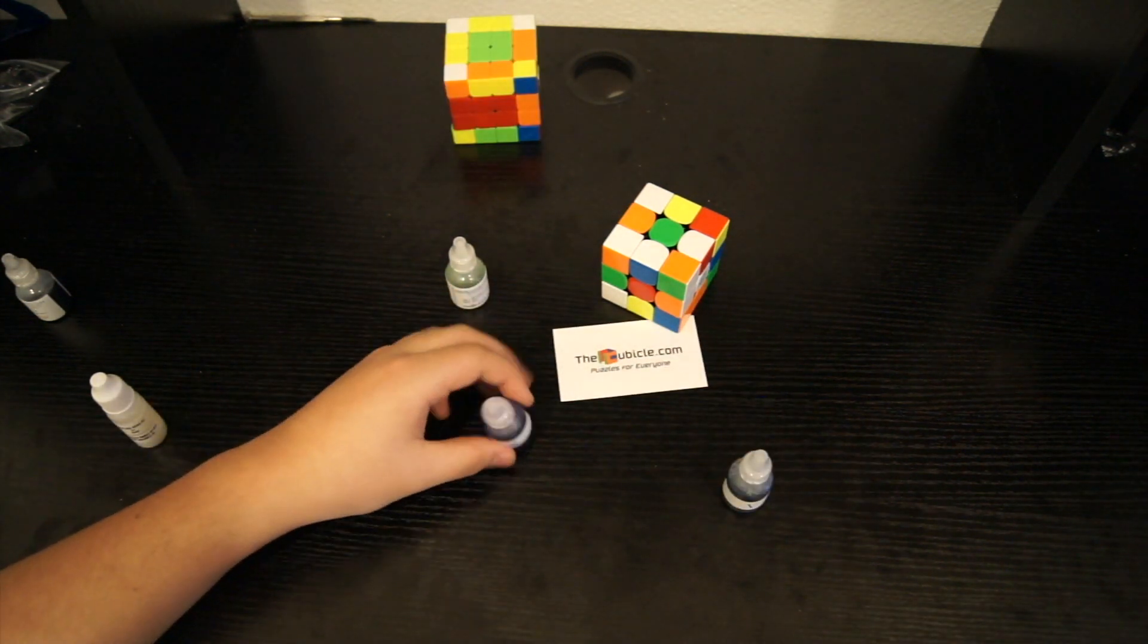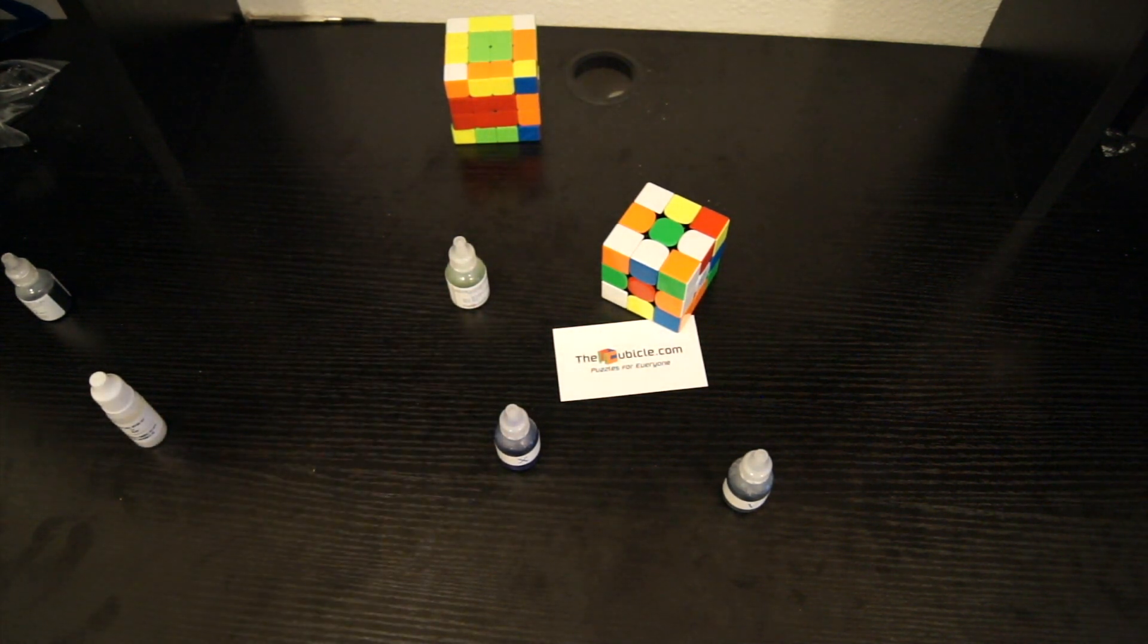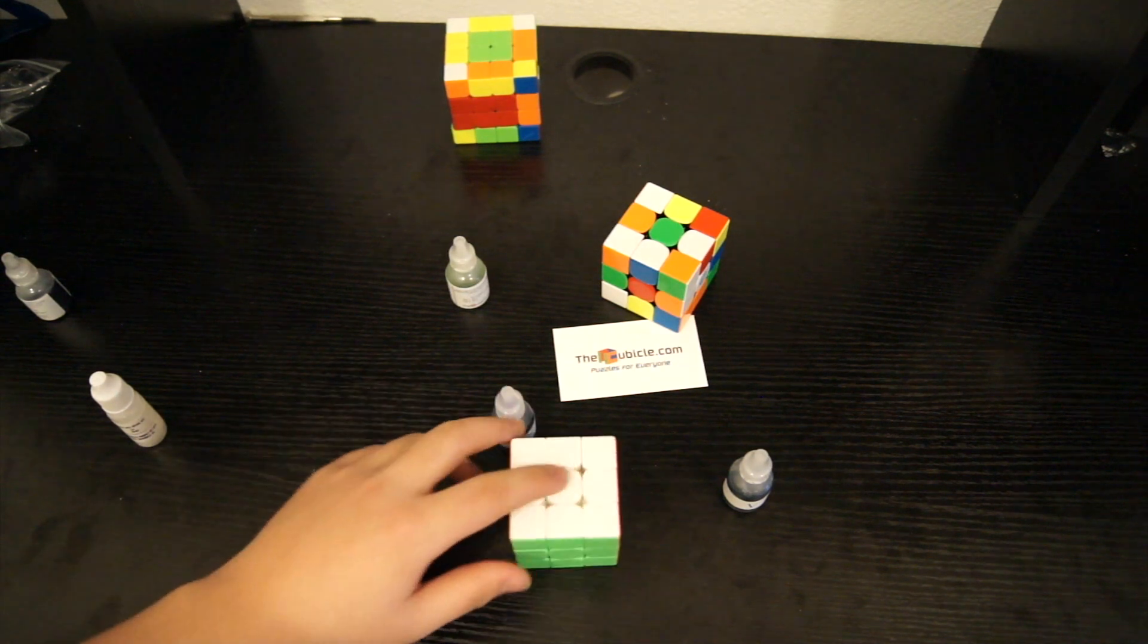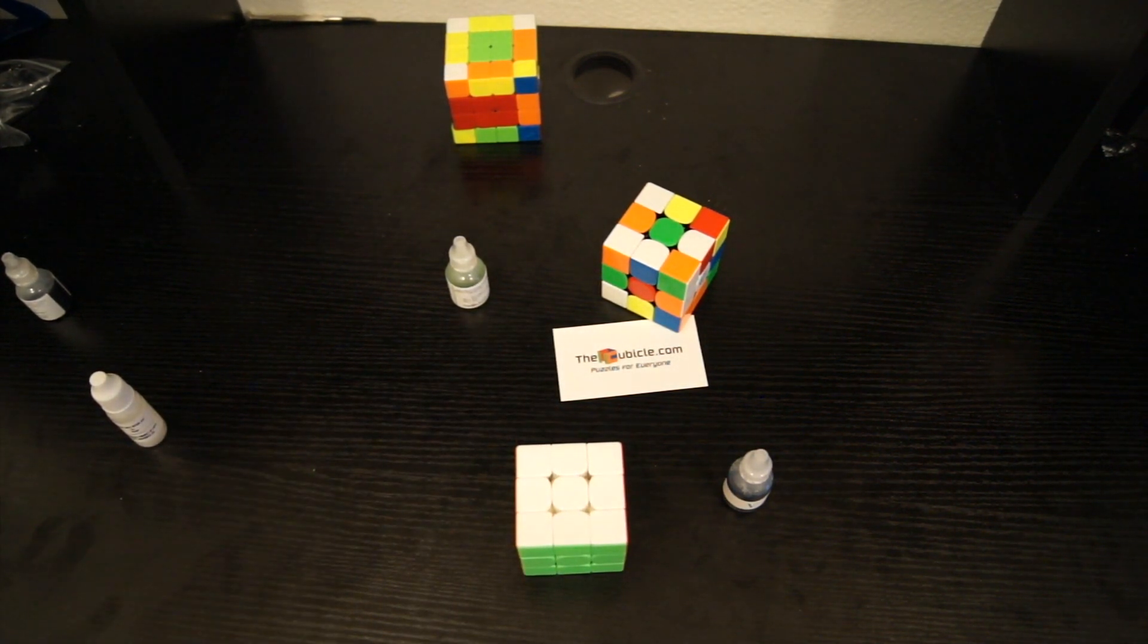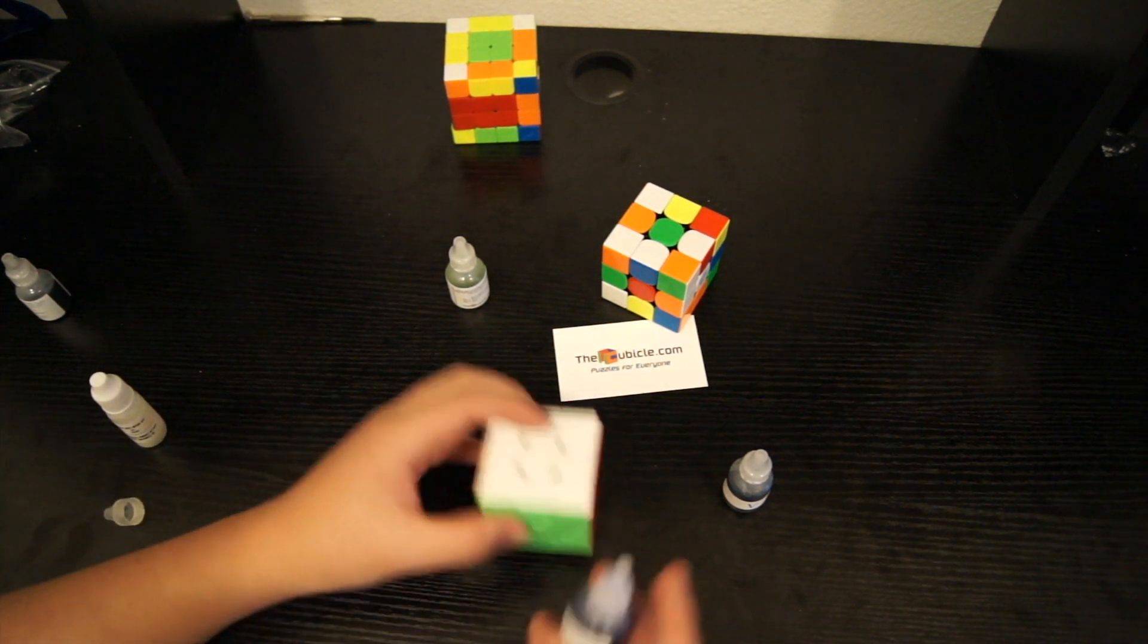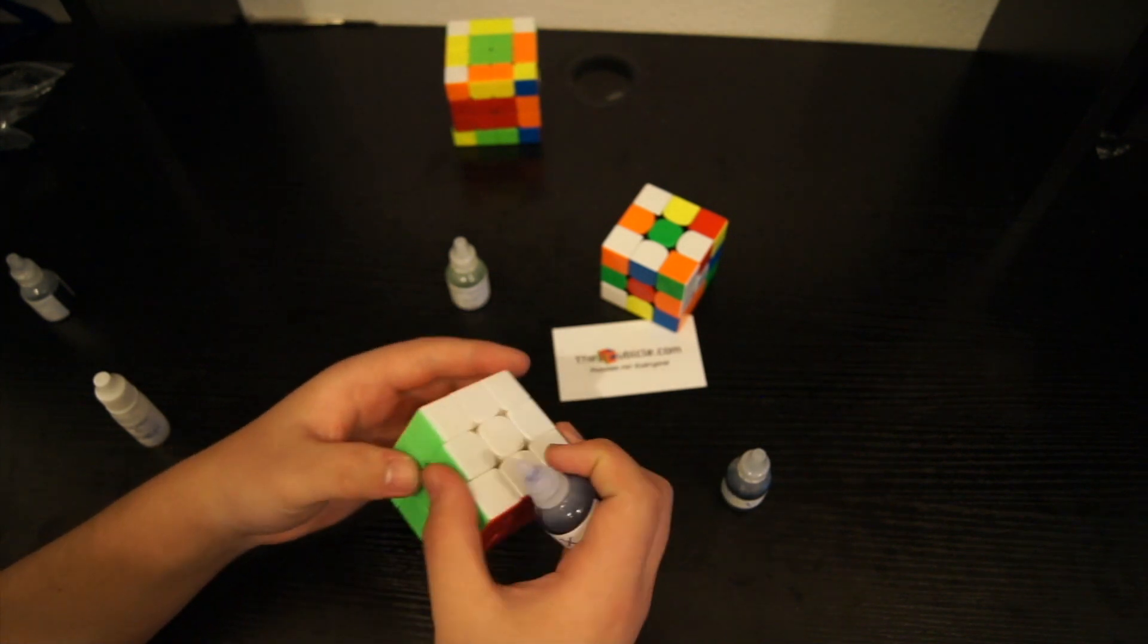Alright, now Compound X is supposed to kinda slow down your puzzles. And I do have a cube. So this is my GTS 2M, and the GTS series is really, really fast. So I wanted to put some of this in and kinda stabilize it.